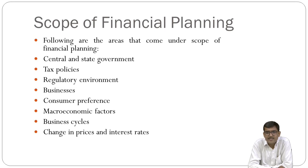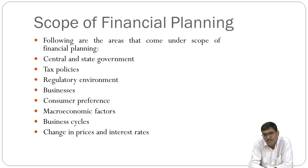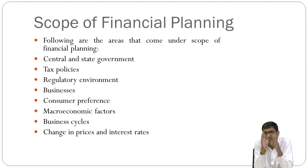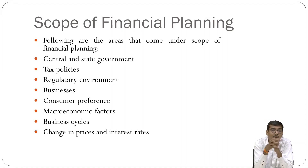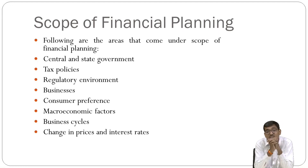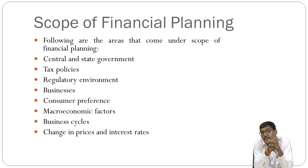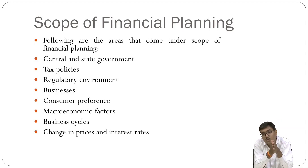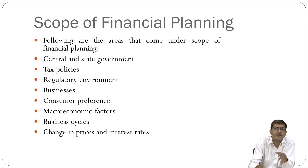Now let us discuss the scope of financial planning. There are different areas in the scope of financial planning. The first area is central and state government — these are factors which affect the different scope of financial planning. Other areas include different tax policies, regulatory environments, businesses, consumer preferences, macroeconomic factors, business cycle changes, and changes in price and interest rates. These are the different areas covered under the scope of financial planning, and beyond this you evaluate your financial planning accordingly.